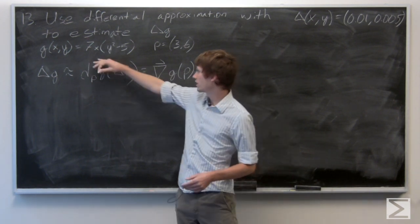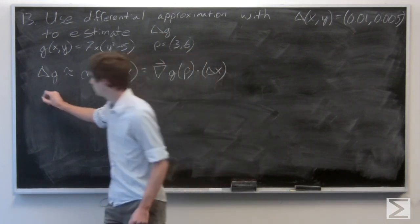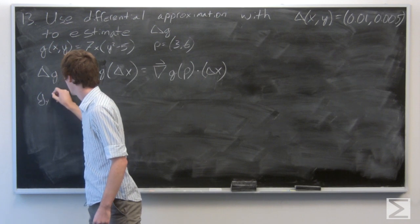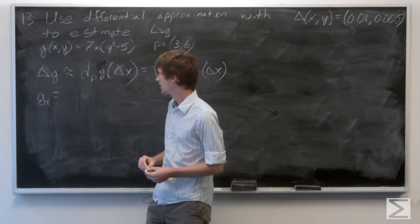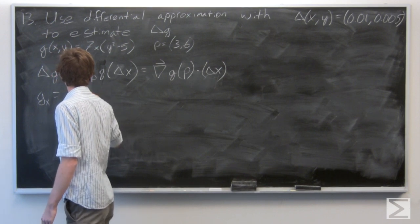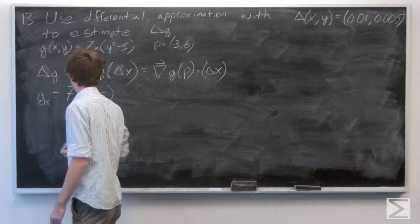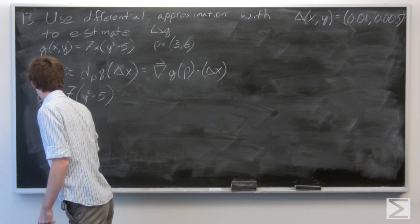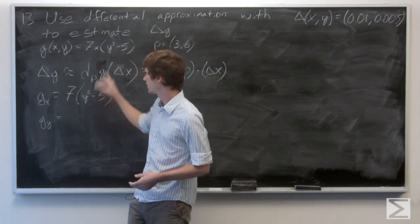So first, we're going to calculate the gradient vector. So we're going to find the partial derivative of g with respect to x and the partial derivative of g with respect to y.